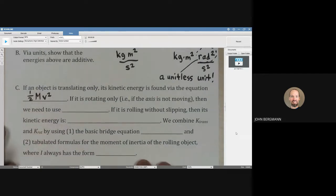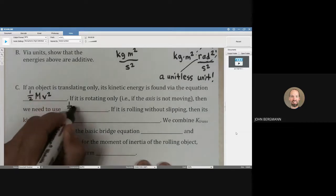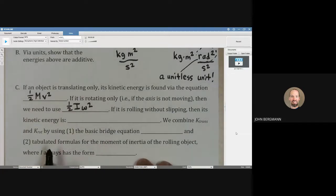If it's rotating only, that is, if the axis is not moving, then we need to use one-half I omega squared.